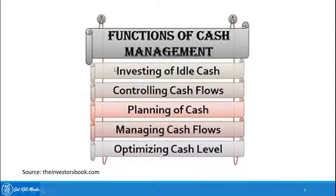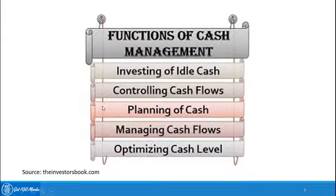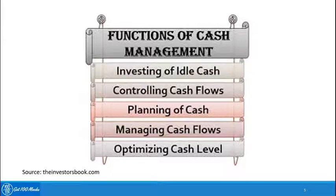The functions of cash management include investing idle cash, controlling cash flows — cash flows through three activities: operating, investing, and financing. Control does not mean stopping the flow of cash but managing it in a controlled manner. Planning of cash, managing cash flows, and optimizing cash levels are key functions — ensuring the organization does not fall short of liquidity while also not affecting profitability.